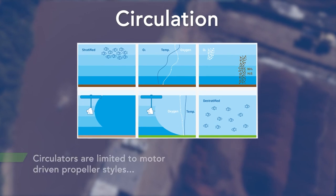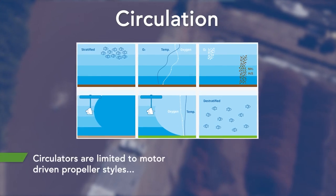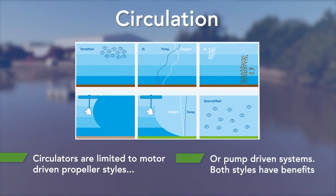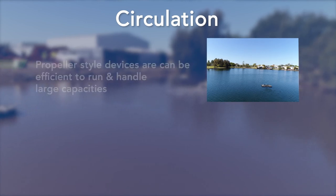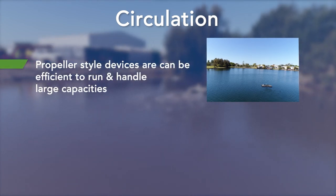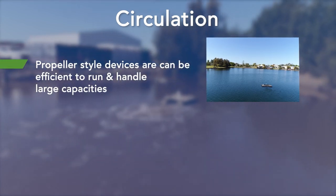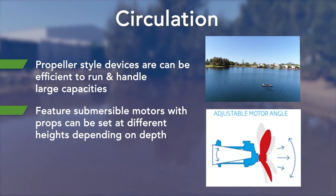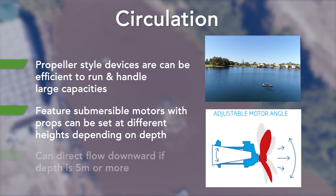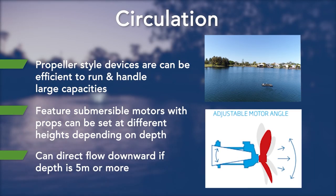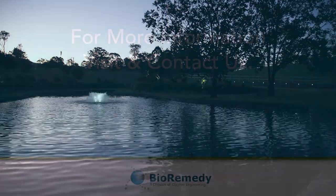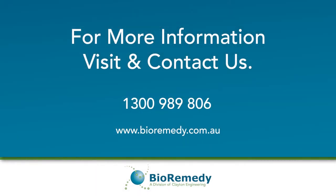Circulators designed for water bodies are limited to motor-driven propeller-style circulation or pump systems, and both styles have their own benefits. Propeller-style devices are often efficient to run and have the capacity to circulate large volumes of water. Submersible motors with props can be set at different heights depending on the depth, and they can often be directional, directing flows downward in circumstances where the depth is five meters or more. We hope that this video has helped you understand a little more about the importance of aeration and circulation in water bodies. Thanks again for watching.